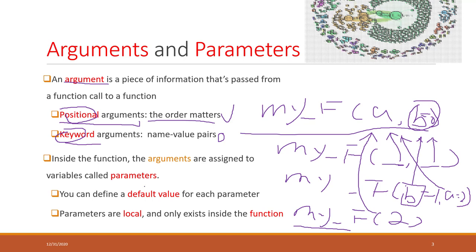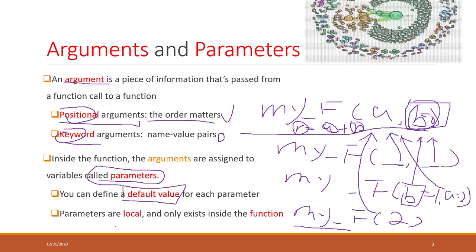Inside a function, the arguments are assigned to variables called parameters. For example, in our previous example, result, a, and b are all parameters. You can define default values for each parameter. Remember that those parameters are local — they can only exist inside the function. If you try to access those variables outside the function, you will get errors.